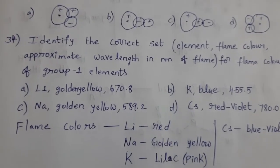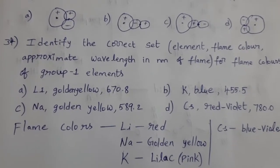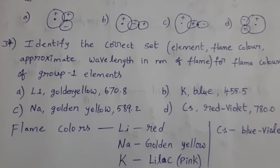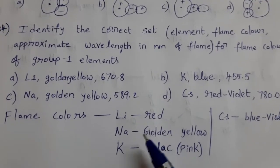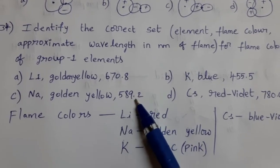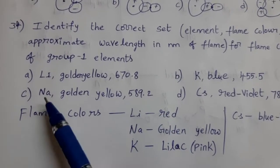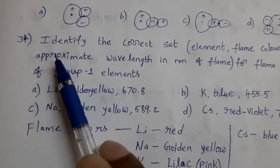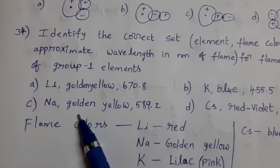For these type of questions, we need not by heart wavelength values. If you remember colors, from that we can get the answer. Here, for sodium golden yellow, so this is the wavelength. At this wavelength, we can observe this color for this element. Remaining options wrong. Therefore, for this option C is the answer.